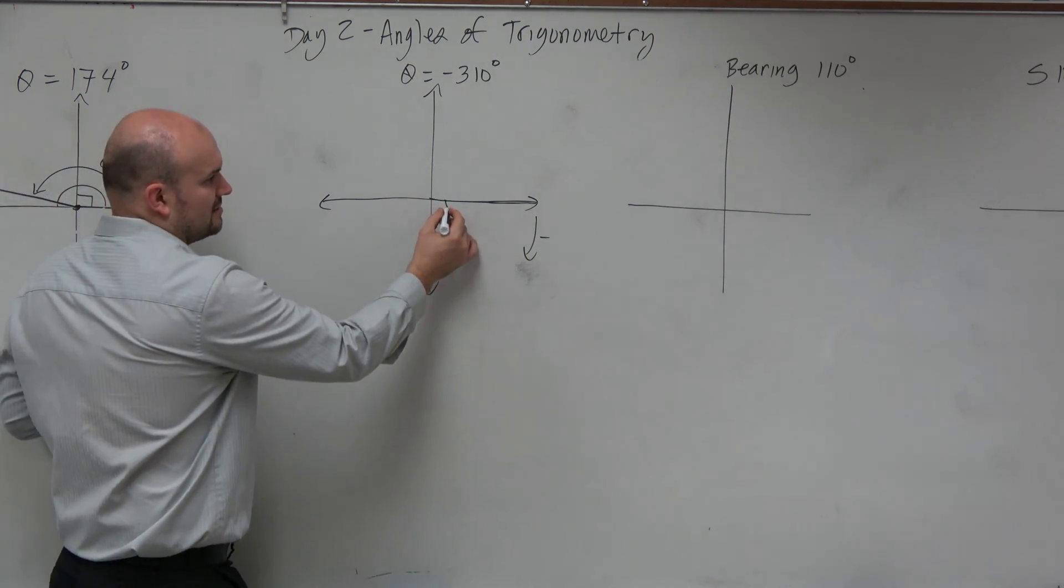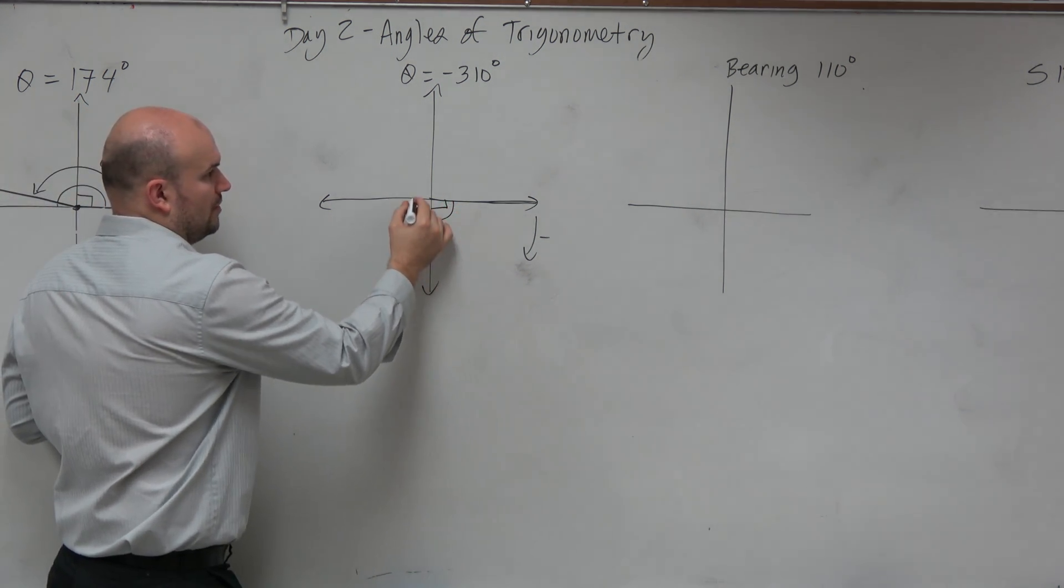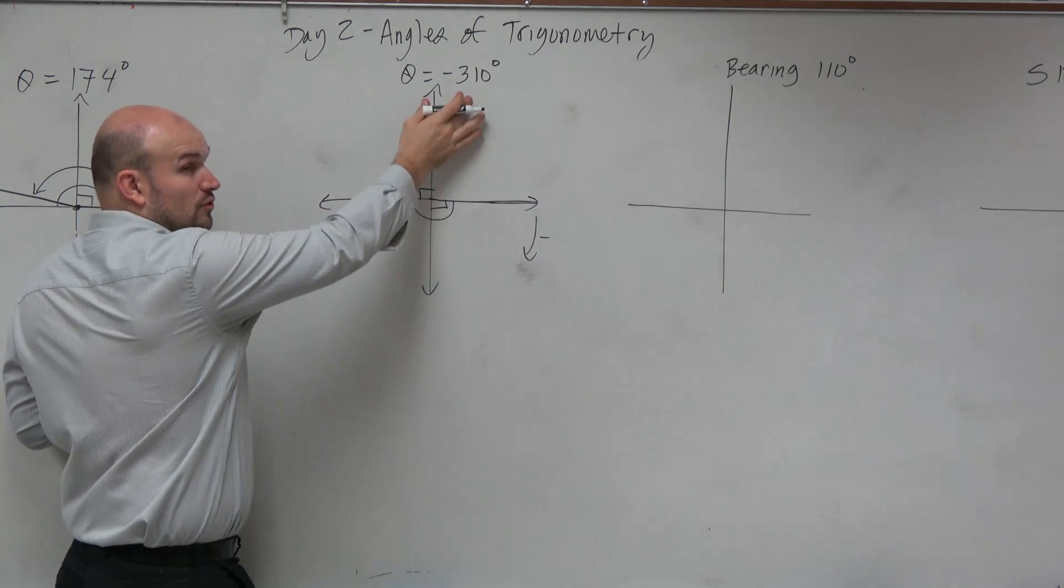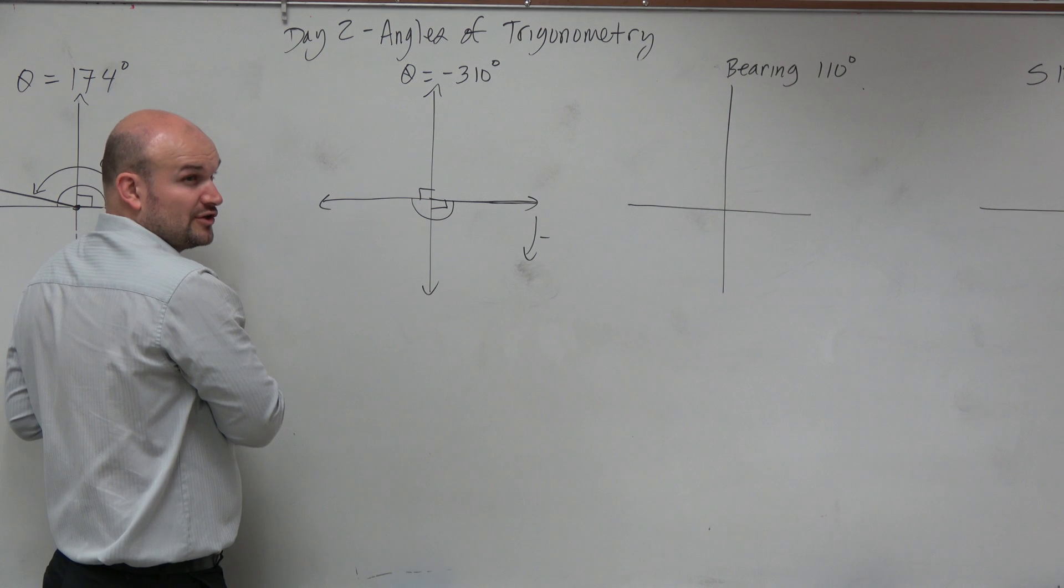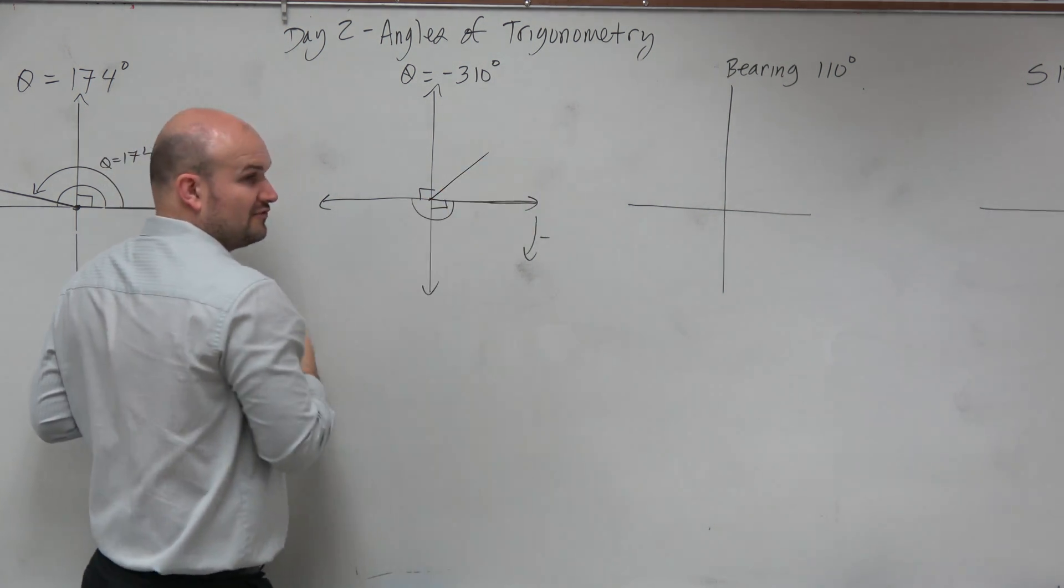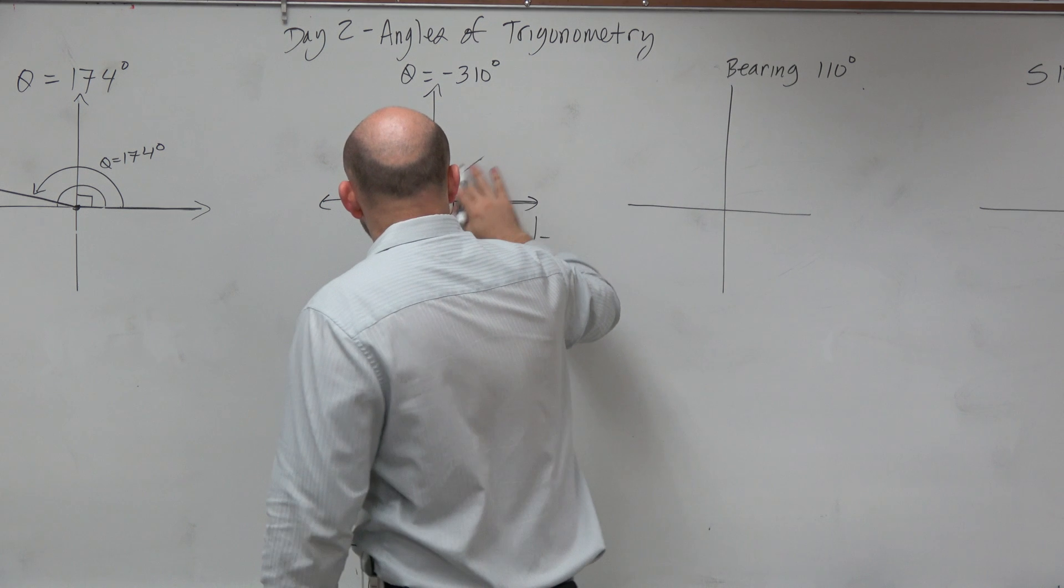And we know that there's 90, 180, and another 90 is going to be 270. We're at 310, so we're about 40 degrees away. We know that half a 90 is like 45, so we'll maybe just be a little bit shorter than that.